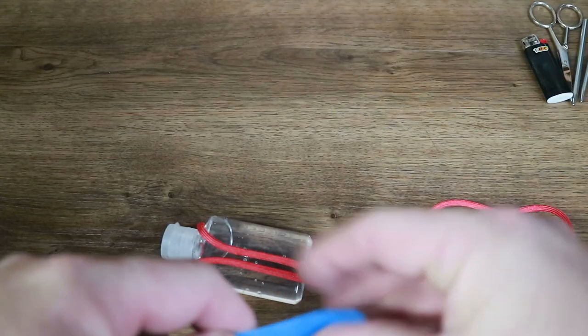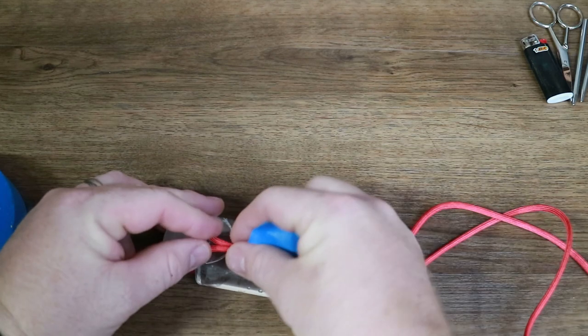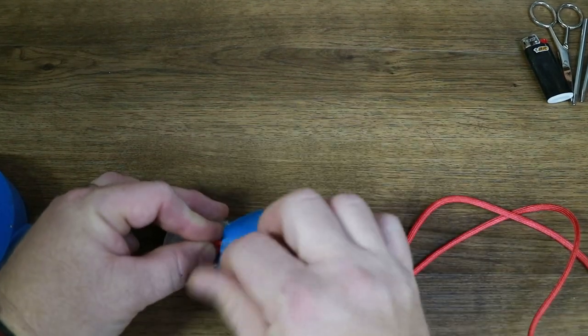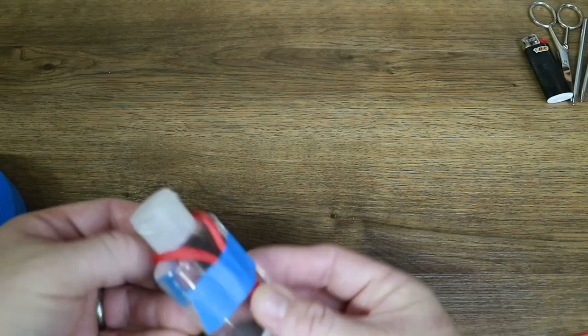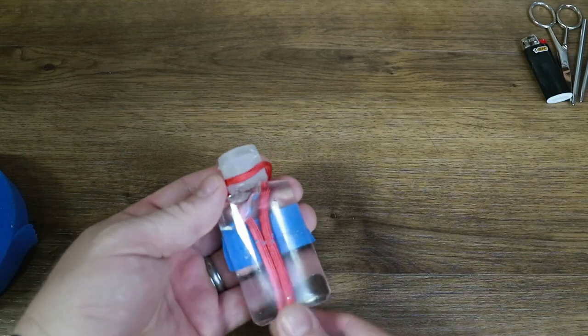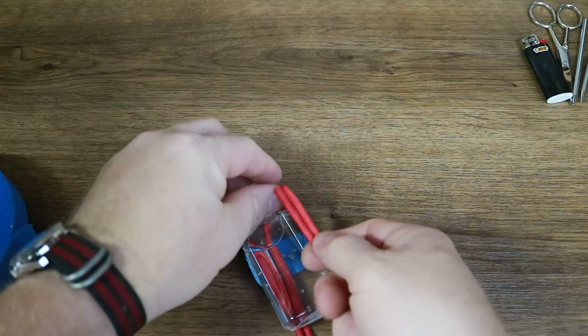Next, get your tape and secure your paracord to the bottle, like this. Flip your grenade over and put the ends of your paracord through the loop you made, pulling it all the way through.